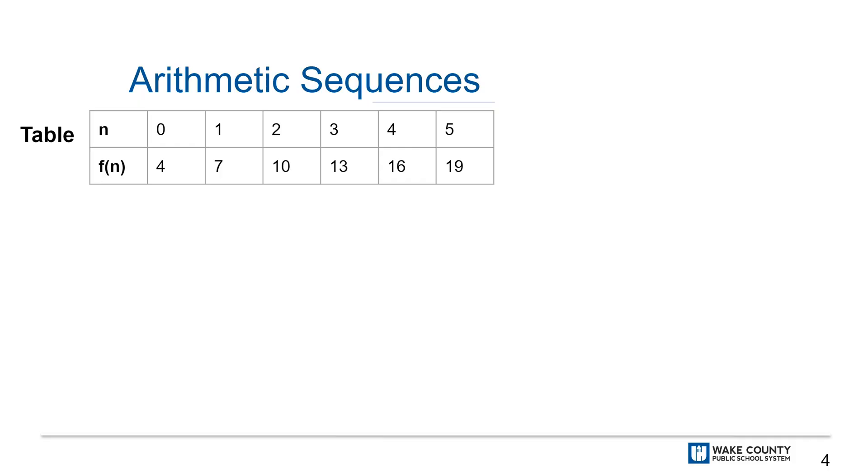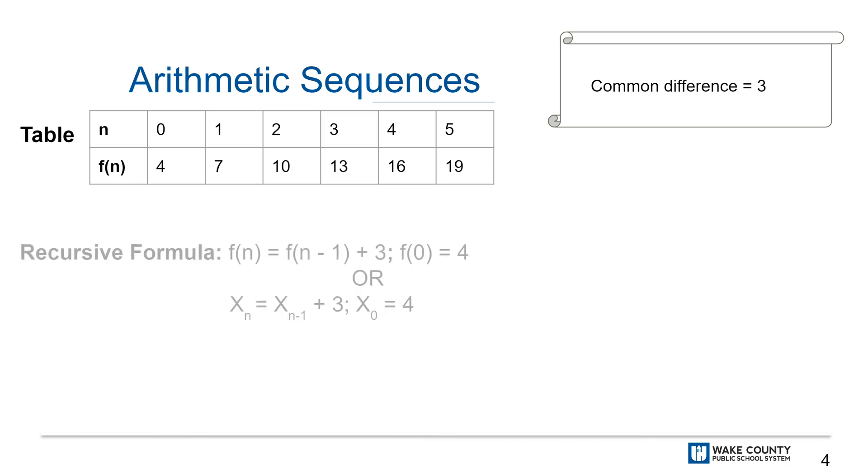Here's an example of an arithmetic sequence in table form. The common difference for this sequence is 3 because the bottom row of values in the table are increasing by 3. A recursive formula would look like this: f(n) = f(n-1) + 3 starting from f(0) = 4, or x_n = x_(n-1) + 3 starting from x_0 = 4. You will be exposed to different types of notations that mathematicians use to represent recursive formulas. They are equivalent representations and we will use both in this unit.